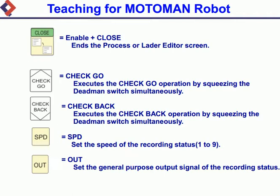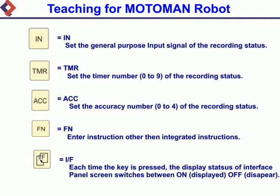SPD: sets the speed of the recording status (1 to 9). OUT: sets the general purpose output signal of the recording status. IN: sets the general purpose input signal of the recording status. TMR: sets the timer number (0 to 9) of the recording status.